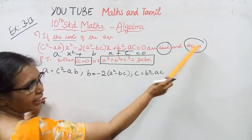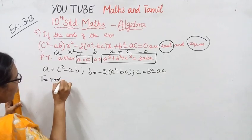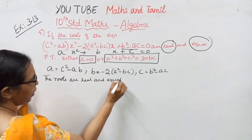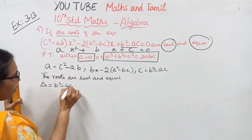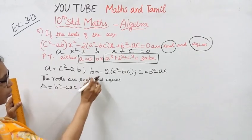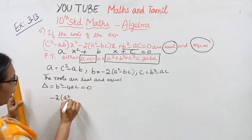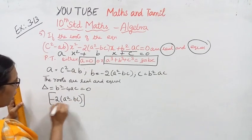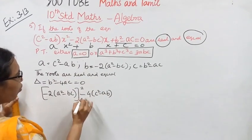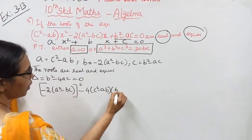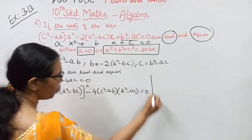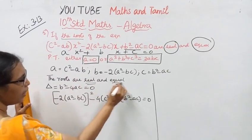Since the roots are real and equal, the discriminant must equal zero: B² - 4AC = 0.